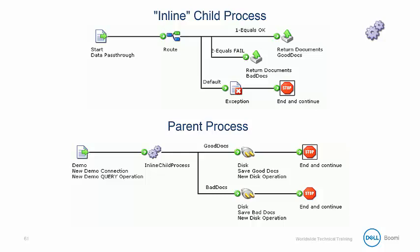In this example, a process stores data in a local disk location and includes common routing logic to identify documents as good or bad. Instead of recreating this logic again and again, it can be saved as a separate component on the component explorer as a child process, and then called from a parent via the process call shape.